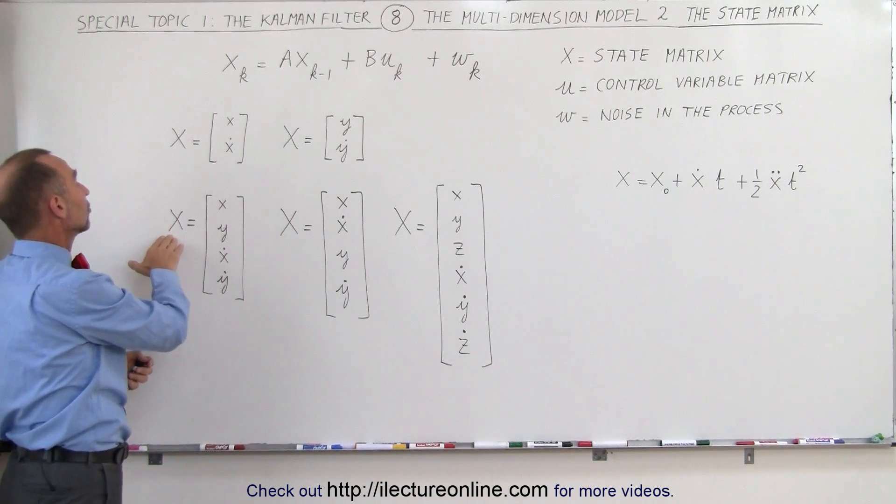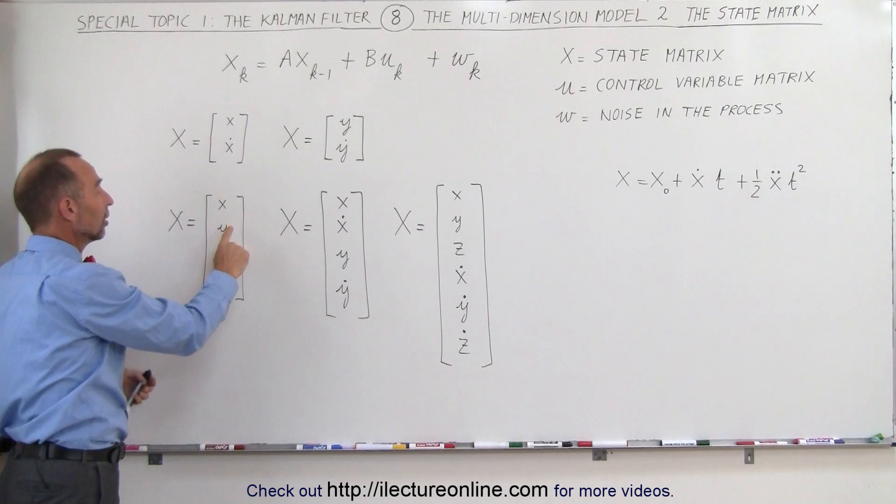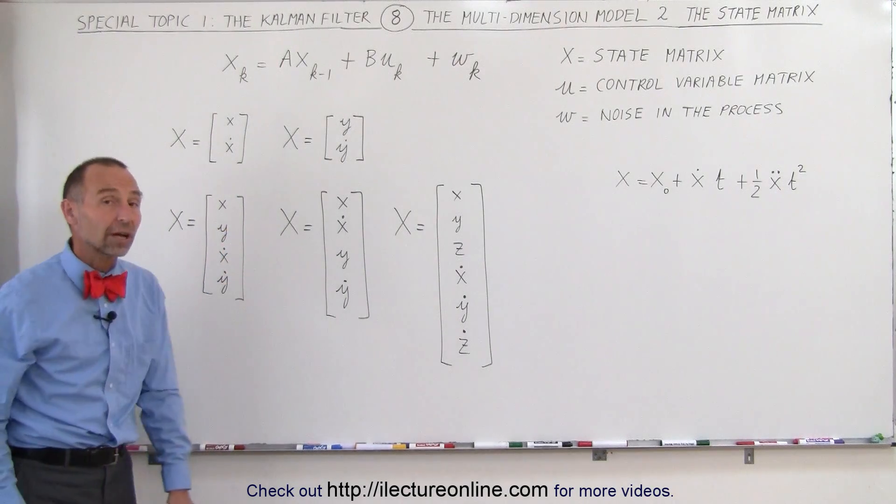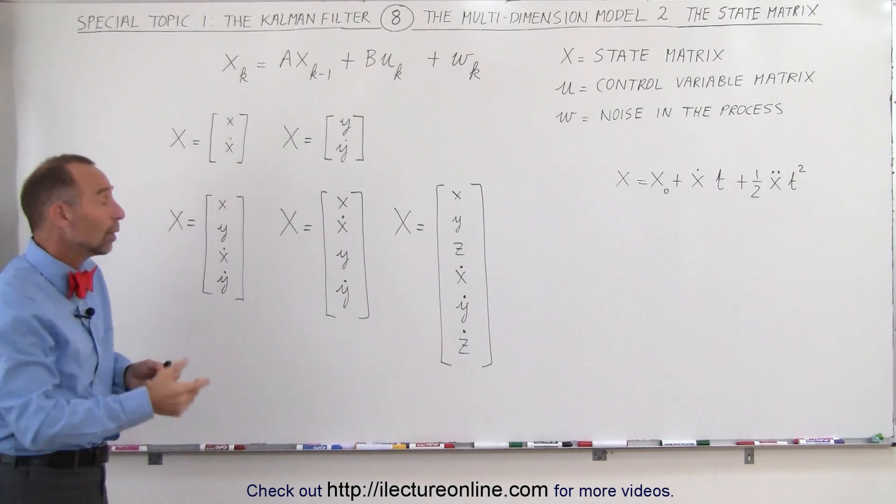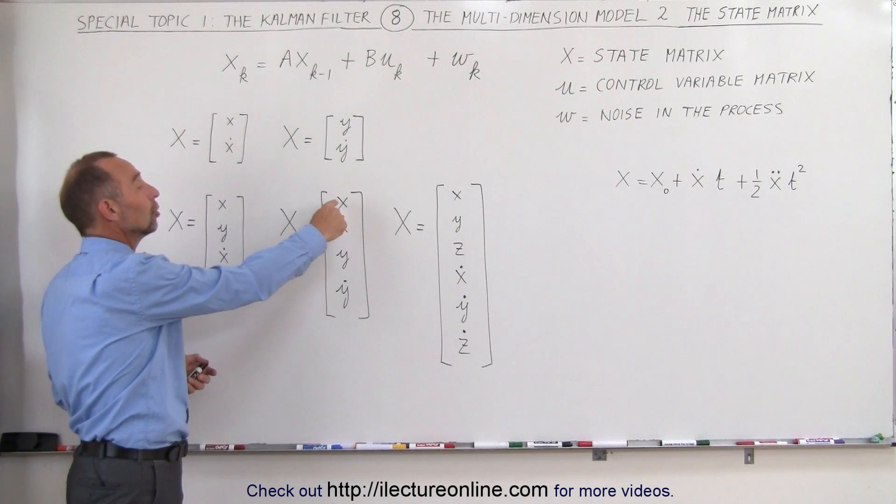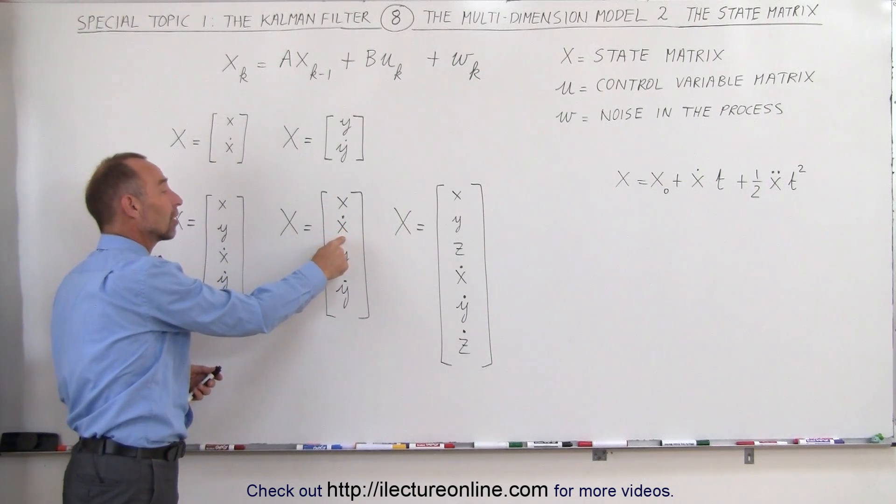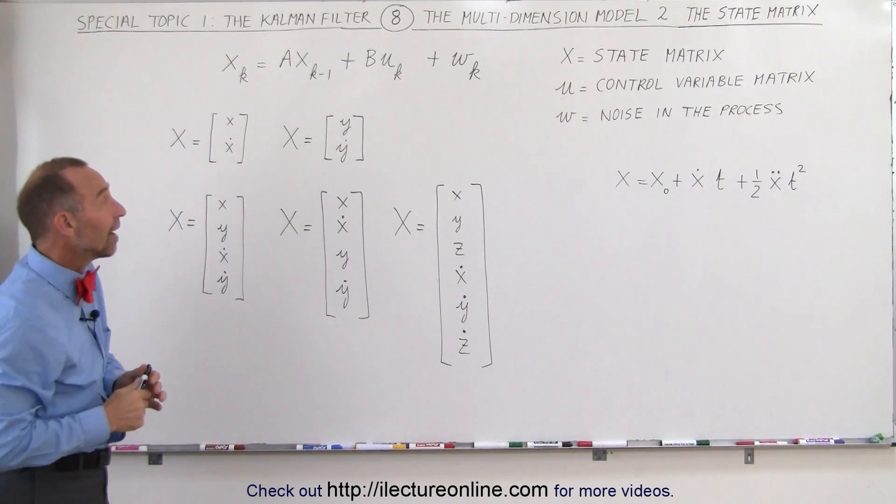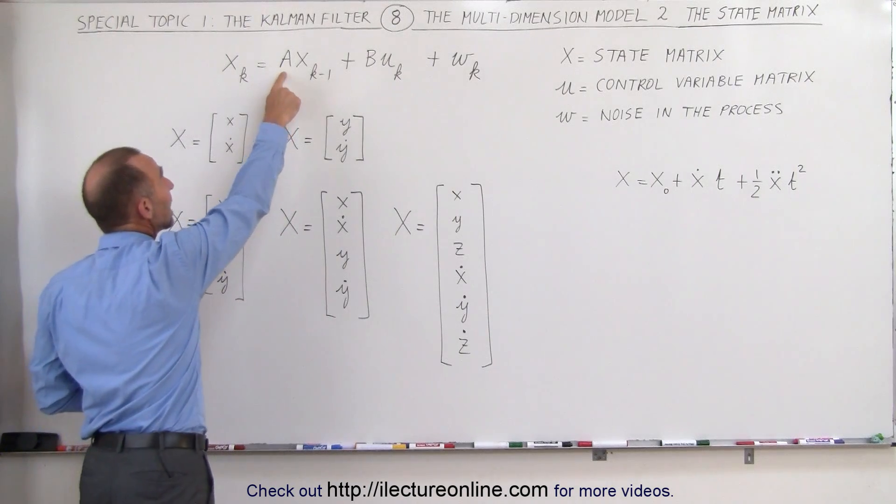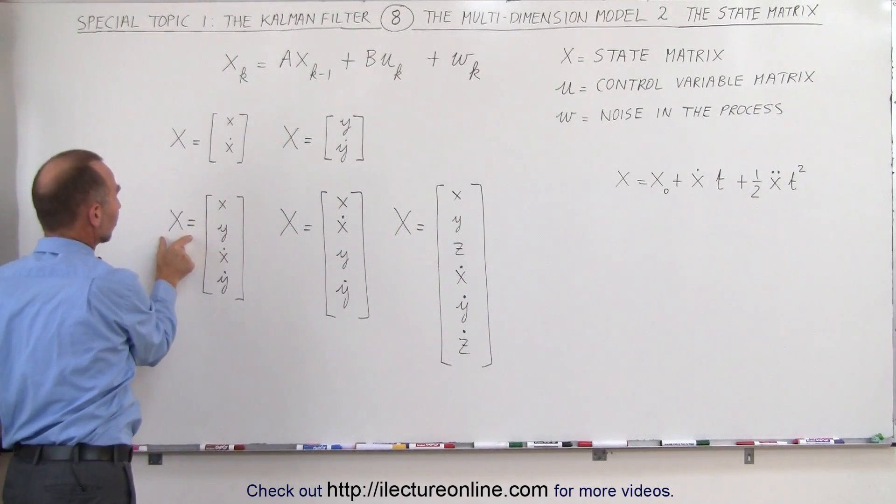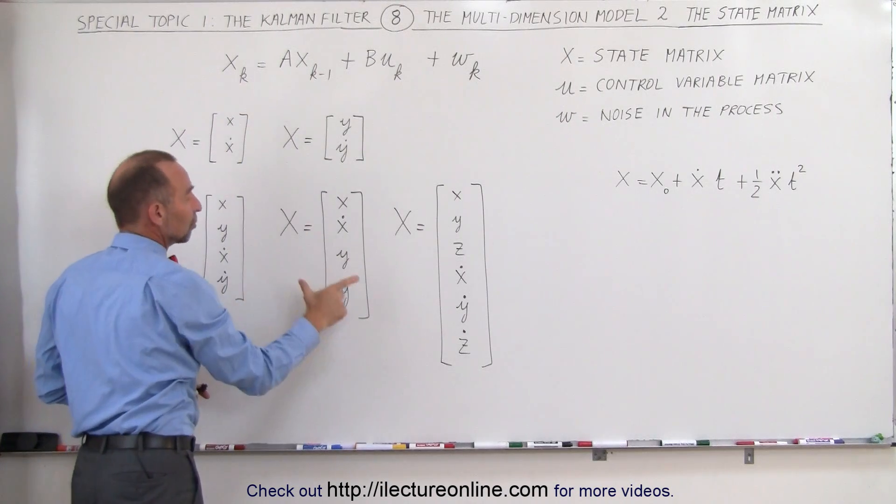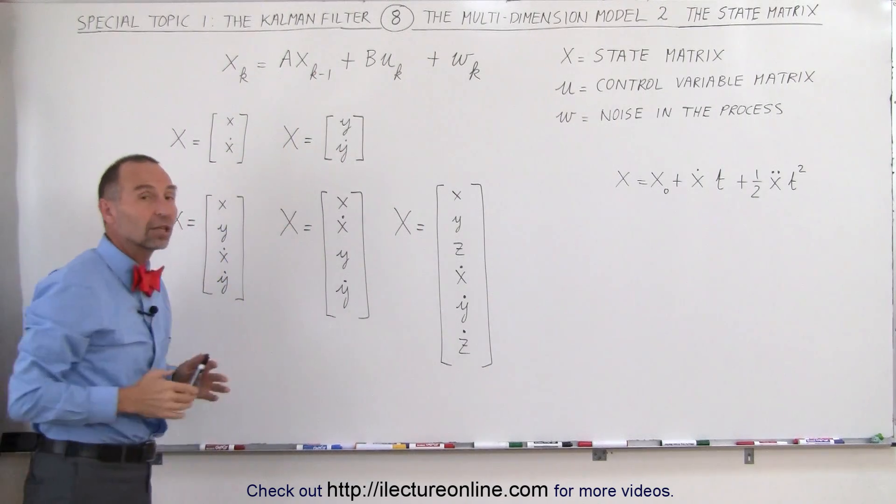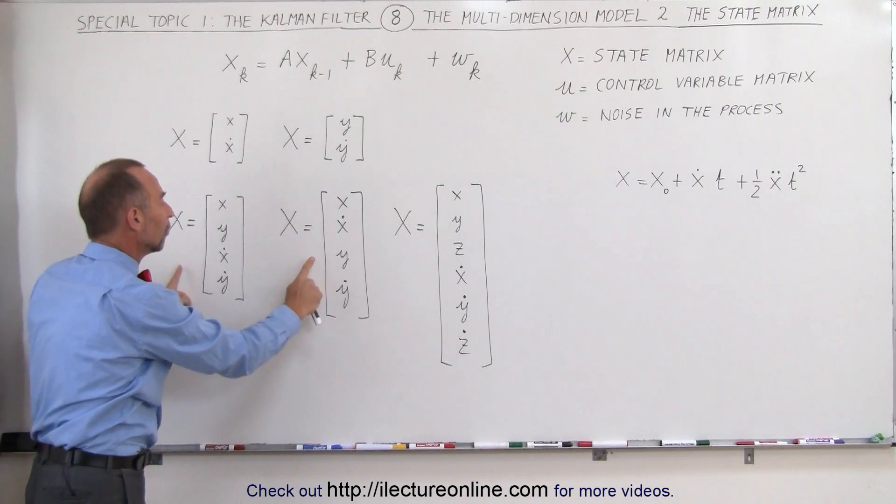In two dimensions, we can have a state matrix that looks like this. We get the position in the X direction, the position in the Y direction, the velocity in the X direction, and the velocity in the Y direction. But you don't have to write it like this. I've seen it where they have state matrices that look like this. Here they show you the position in the X direction, the velocity in the X direction, the position in the Y direction, and the velocity in the Y direction, and either methodologies are perfectly fine. But that means that the matrix A will be different when you express the state matrix like this compared to what this would be when you express the state matrix like that, because then you have to convert from here to there to this matrix in a different methodology, and I'll show you some examples of how that's done for both of these matrices.